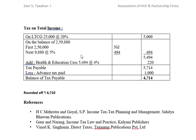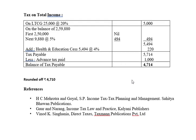Now let us compute the tax liability on total income. On long-term capital gain of Rs. 25,000 at the rate of 20% comes to Rs. 5,000. On the balance, we deduct Rs. 25,000 from total income to get Rs. 2,59,880. The first Rs. 2,50,000 tax is nil, and on the balance Rs. 9,880 tax at 5% gives total tax of Rs. 5,494. Plus health and education cess at 4% on Rs. 5,494 is Rs. 220. Therefore tax payable is Rs. 5,714. Less advance tax paid Rs. 1,000. Net tax liability is Rs. 4,714, which rounded off to nearest Rs. 10 is Rs. 4,710.